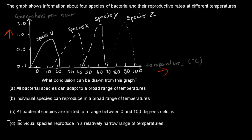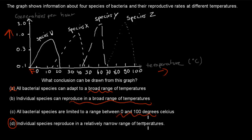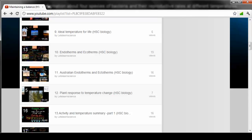The correct answer is D. A is wrong — bacteria cannot adapt to a broad range; individual species only have a limited range, as shown in the graph. B is also wrong — individual species have narrow, not broad, limits. C is incorrect because you can already see from the graph that some species go below zero. D is correct because each species has a specific narrow temperature range where it can survive. This comes from video number 9: Ideal Temperatures for Life.